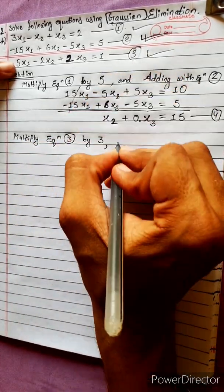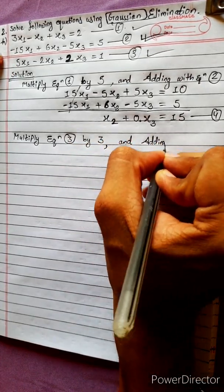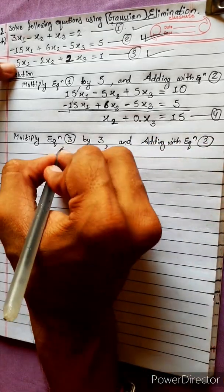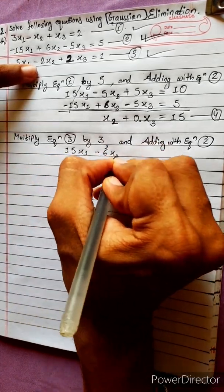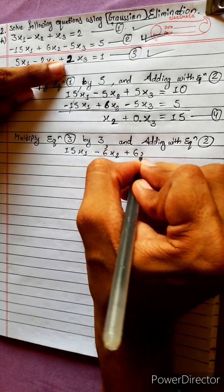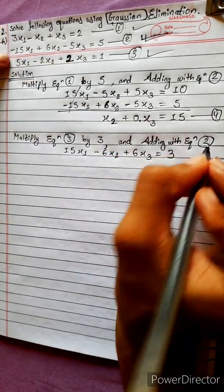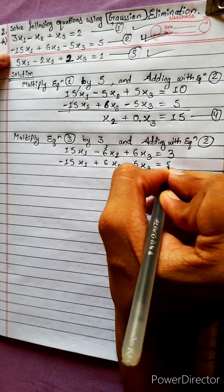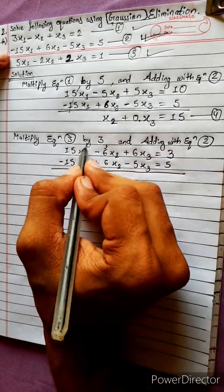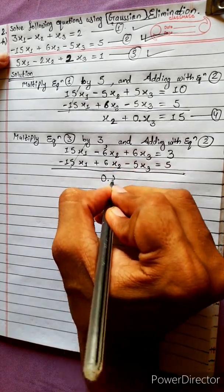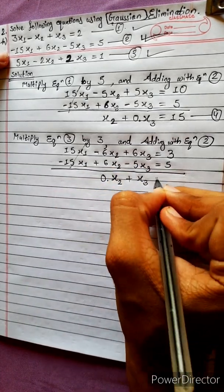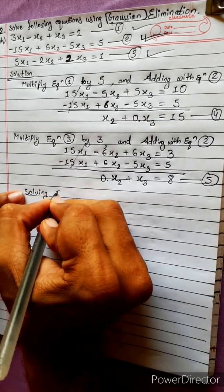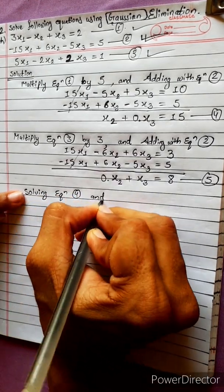Multiply equation 3 by 3 and add with equation 2. Equation 3 multiplied by 3 gives 15x1, 3 times 6x2, plus 3 times 2 equals 6x3, giving 3. Adding with equation 2 as it is: plus 6x2 minus 5x3 equals 5. This gives equation 5: 0 into x2, plus x3 equals 8.